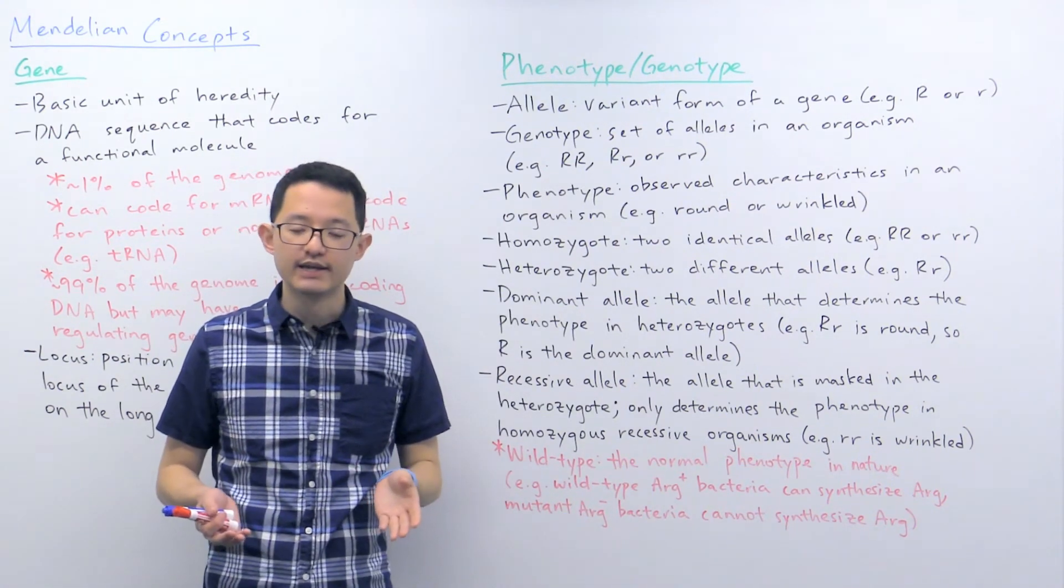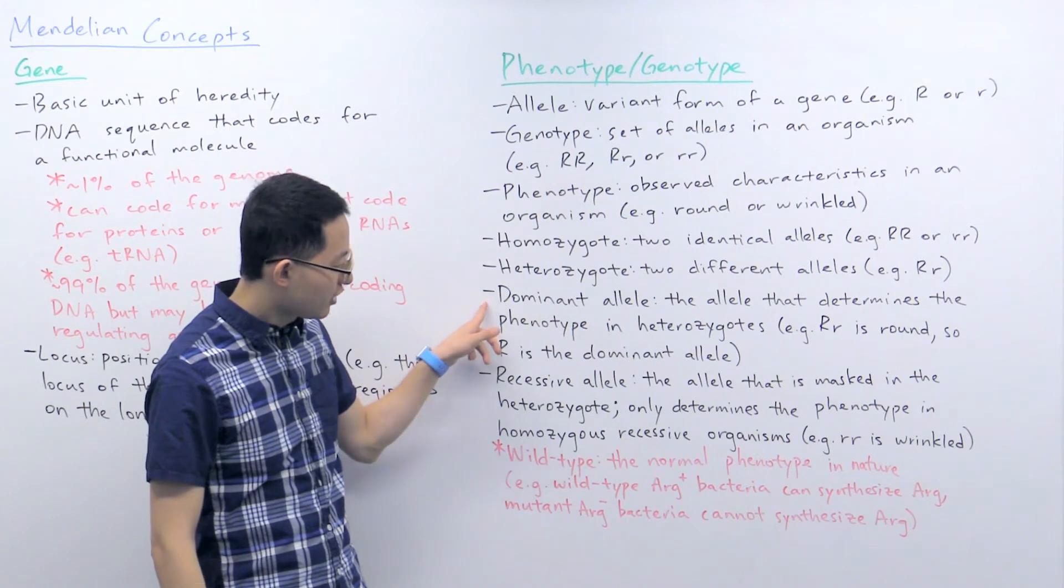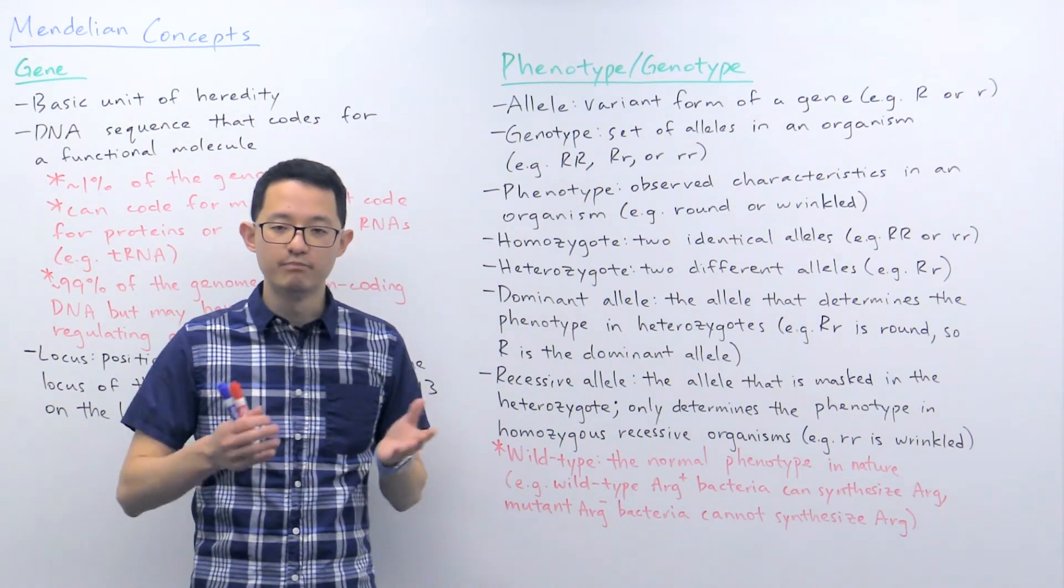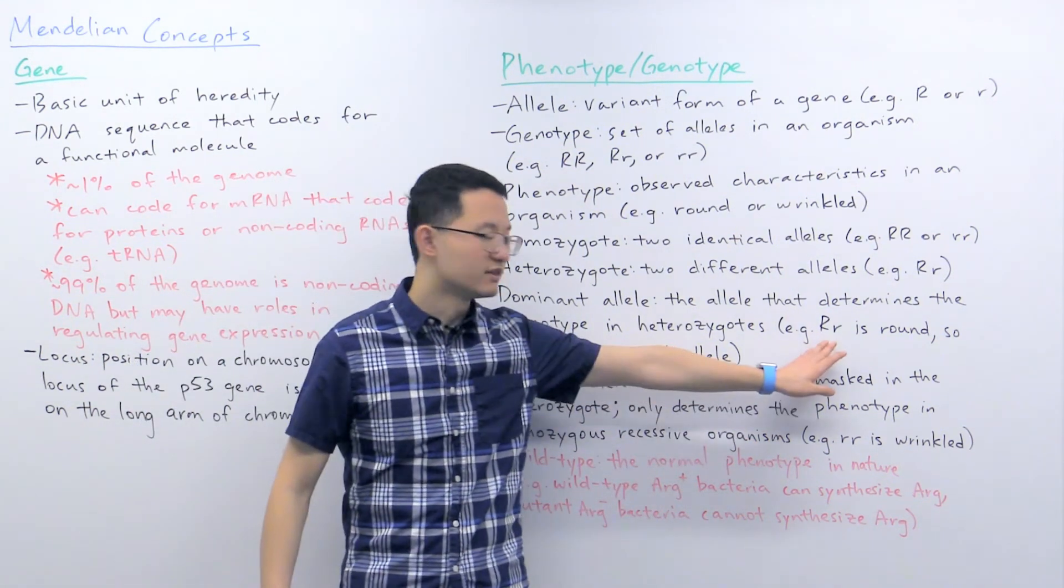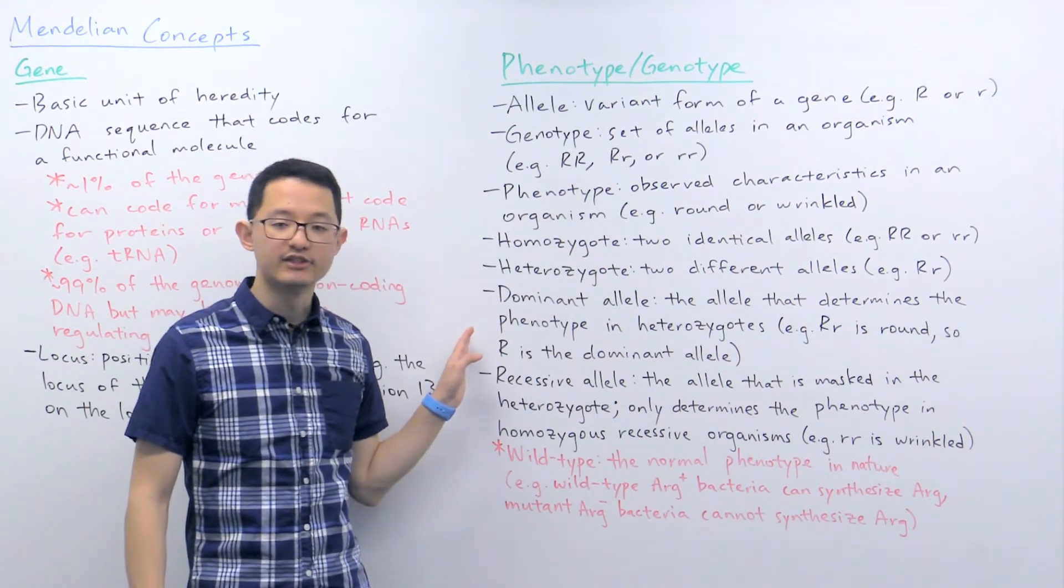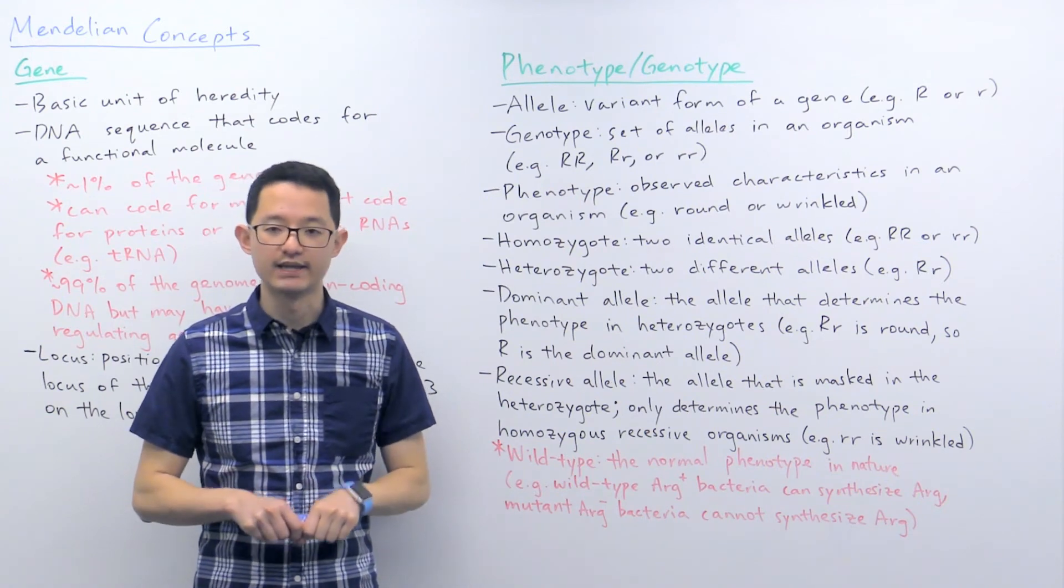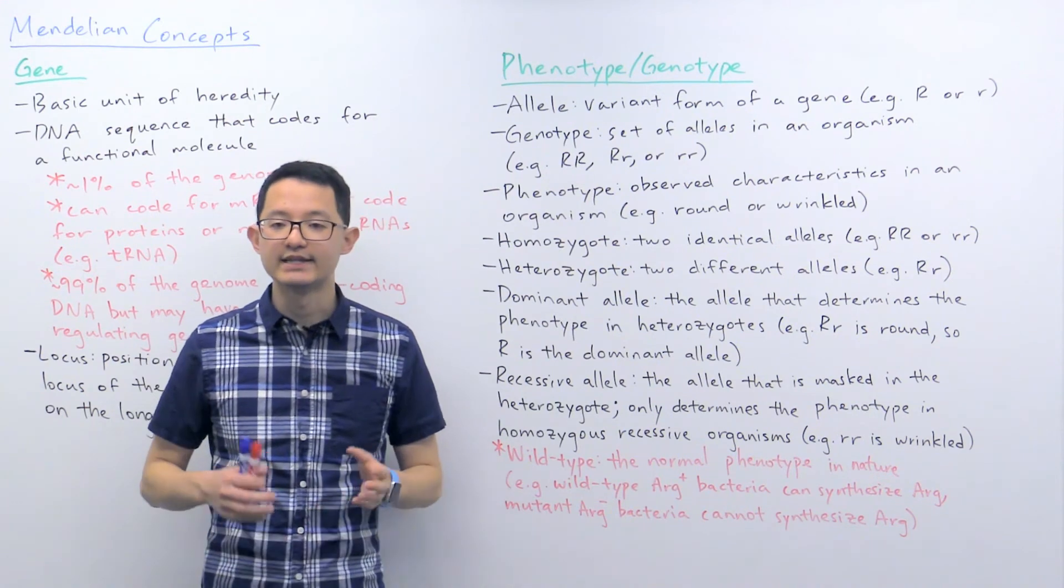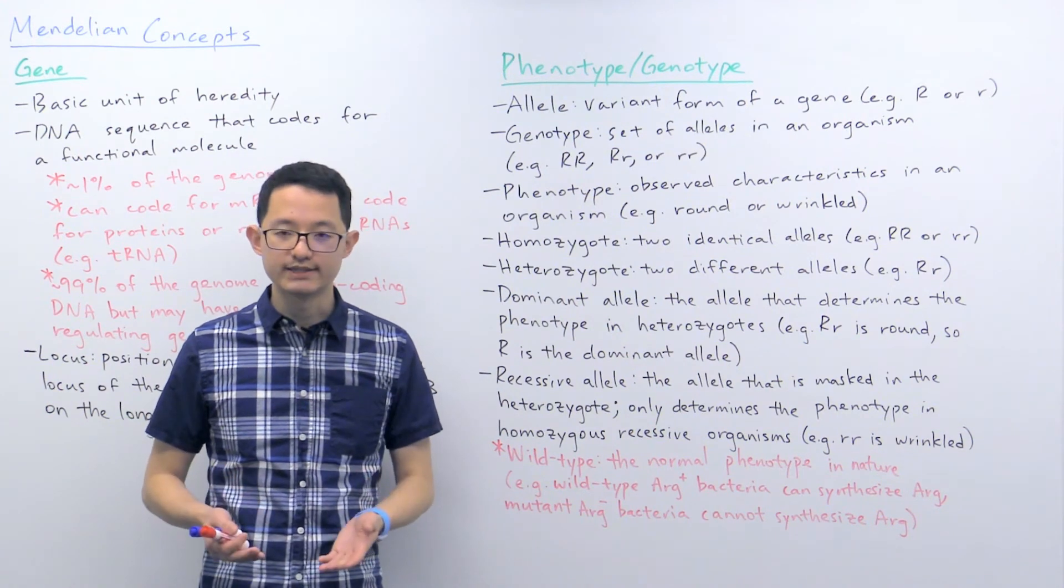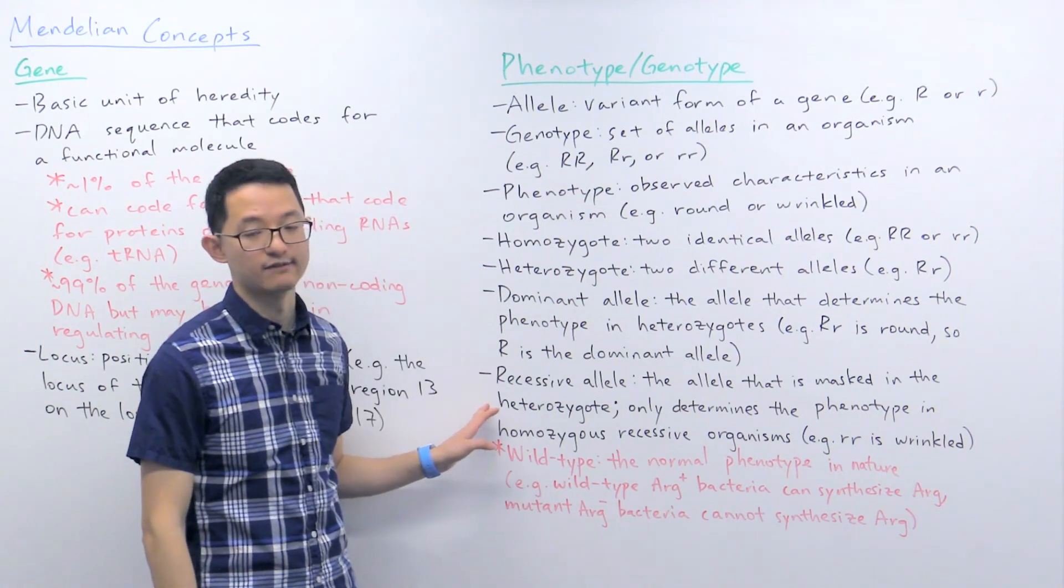In heterozygotes, it's a little bit more complicated. And this is where we can talk about dominance and recessiveness. So the dominant allele is the allele that determines the phenotype in heterozygotes. So when you look at a big R little r organism, you can look at its shape. And since the big R little r shape is round, that means big R is the dominant allele. And again, the dominant allele is the one that determines the phenotype in heterozygotes. The recessive allele, on the other hand, is the allele that is masked by the dominant allele in heterozygotes, meaning that the only instance where the recessive allele is going to determine the phenotype is in homozygous recessive individuals.